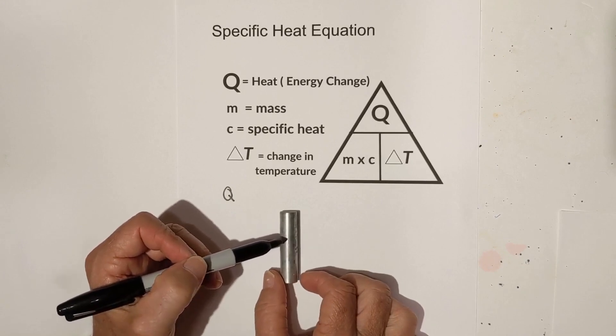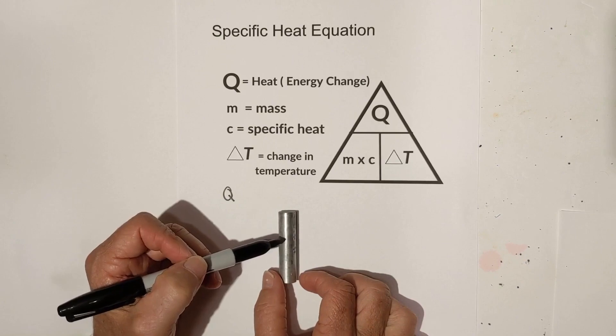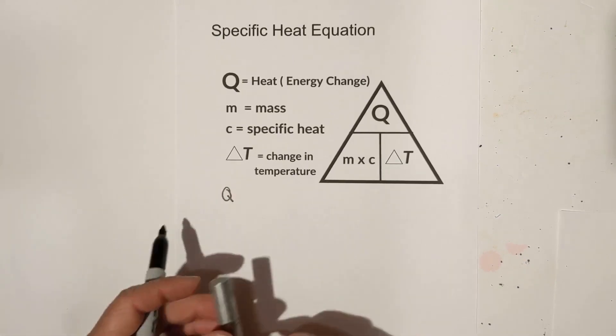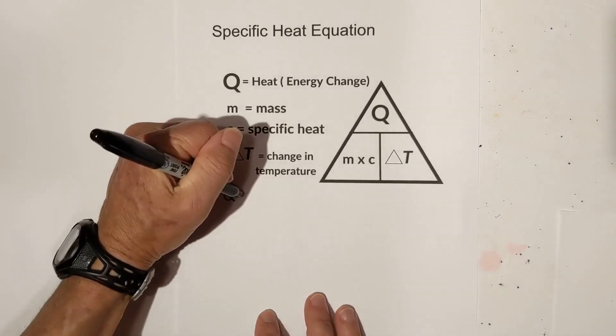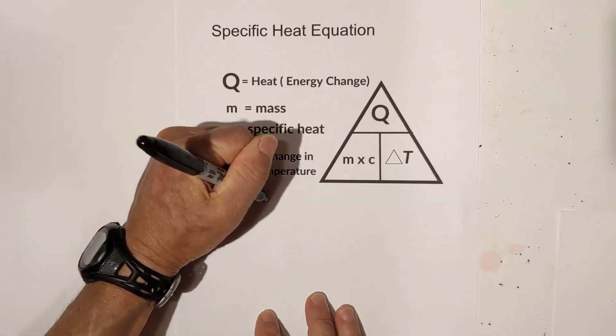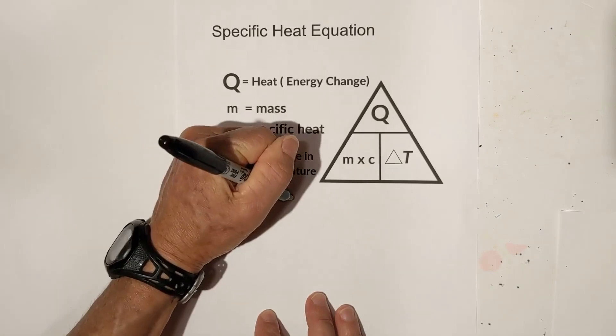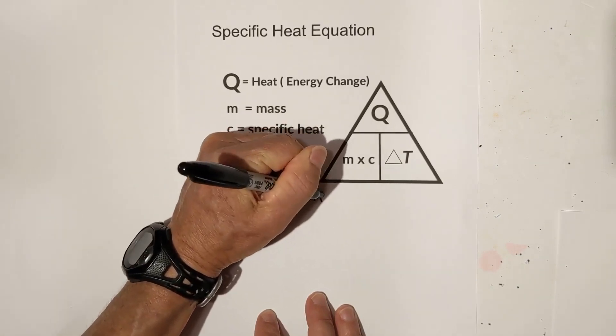Or lower the temperature—or I guess that would be taking energy away. So Q, using our triangle, is just M times C times change in temperature.